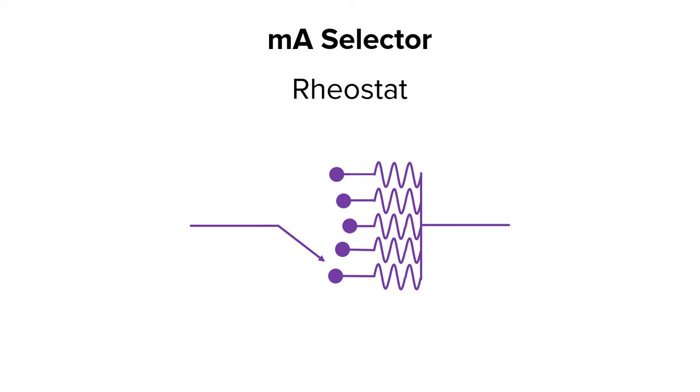The MA selector is controlled by a device called a rheostat. A rheostat is a variable resistor that allows you to control current via your control console. Current is measured in amperes, so this device allows you to control the MA or milliampers of your technique.